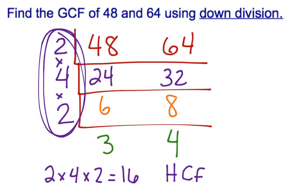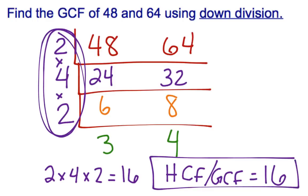That tells us that our GCF, our greatest or highest common factor, is sixteen. So that means sixteen is the largest number that can divide into forty-eight and into sixty-four.